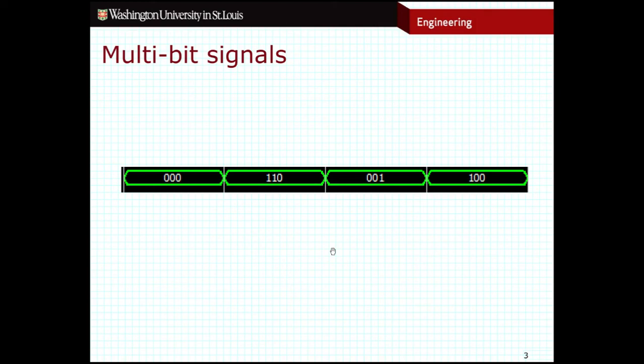For extremely large buses, this is not going to be convenient for us. Three bits is not particularly complex, but imagine if it were a 16-bit wide signal or a 32-bit wide signal. All of those ones and zeros would be inconvenient for us. So we have other ways of representing these values in timing circuits. Specifically, we can use hexadecimal.